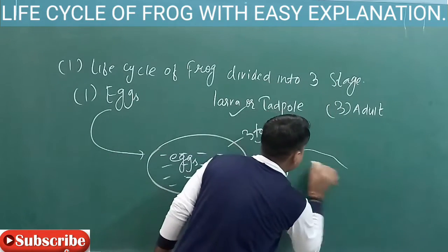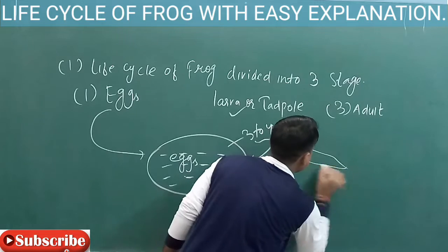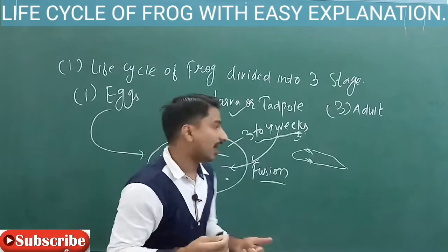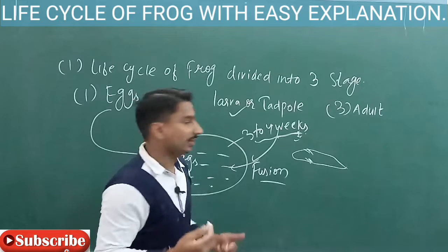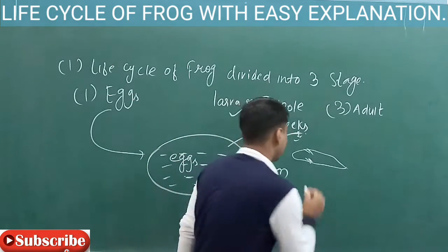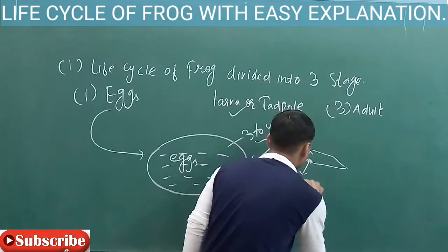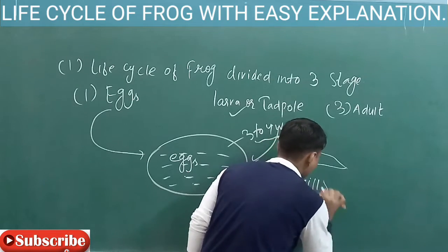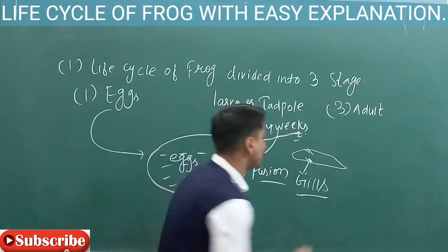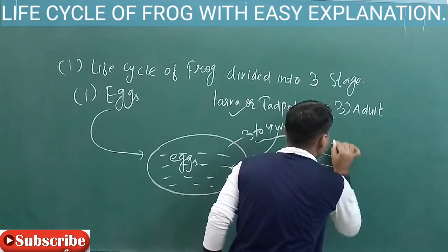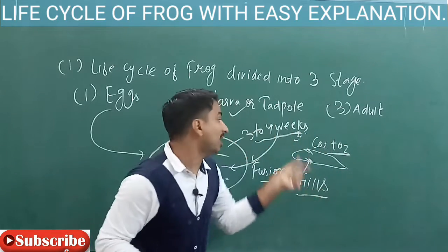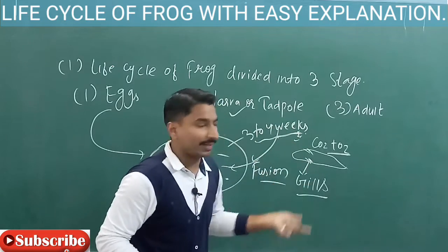So the larva has a figure with small gills present on it. It is like a fish — because in fish also, gills are present for exchange of gases. These gills help in the exchange of CO2 and O2 during the larva stage.